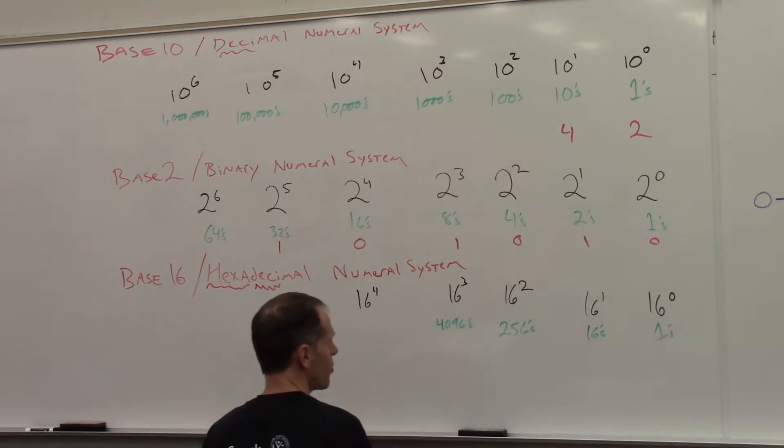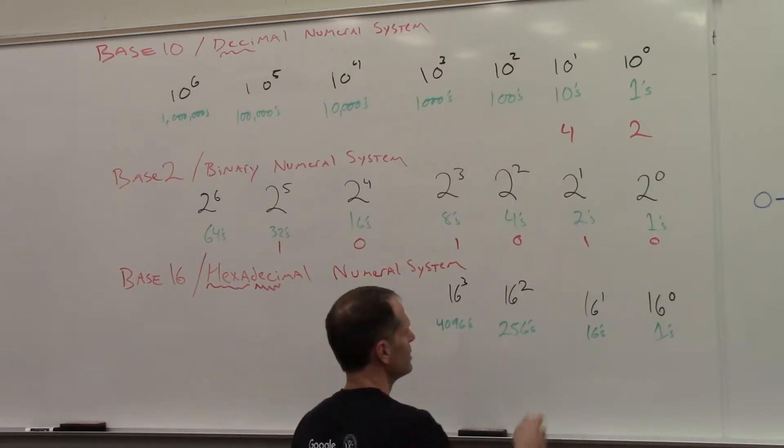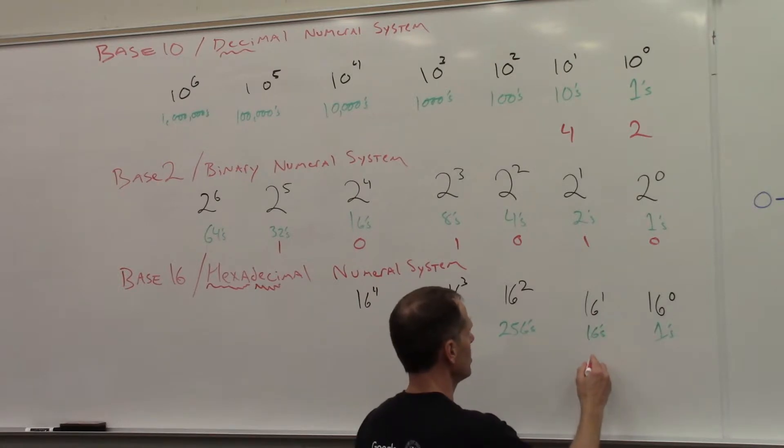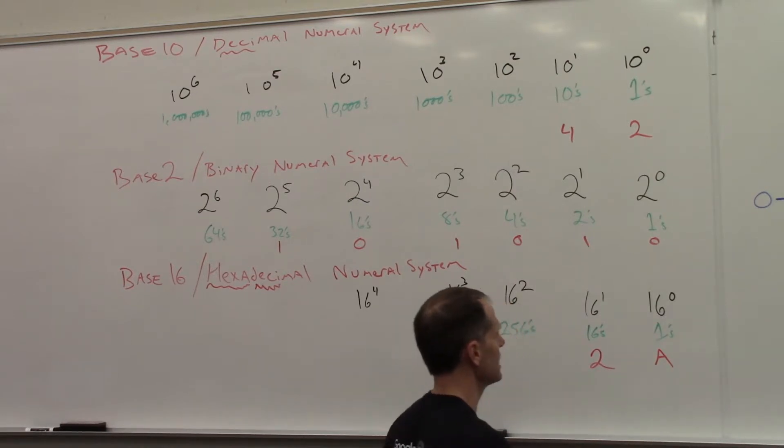So how do we write 42 in hexadecimal? Two of these will give me 32. So 3 would give me 48. So I need 2 of those. And then I need 10 here. 0 through 9, right, gives me 9, because this is the 1s. A will give me 10. 2A is 42 in hexadecimal.